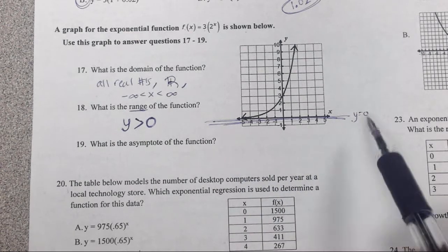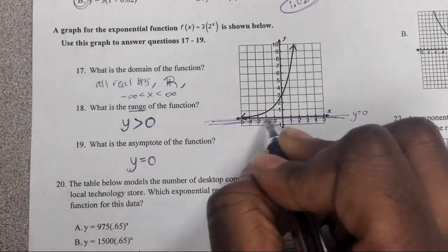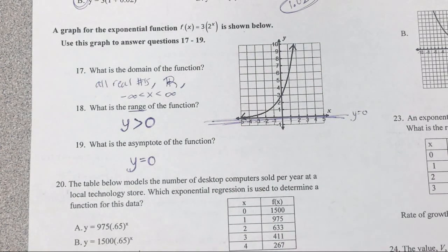But it does look like it, so the asymptote is y equals zero. It's never going to go below the y equals zero and it's actually never going to touch it. So just remember, asymptote is y equals zero for your algebra one.